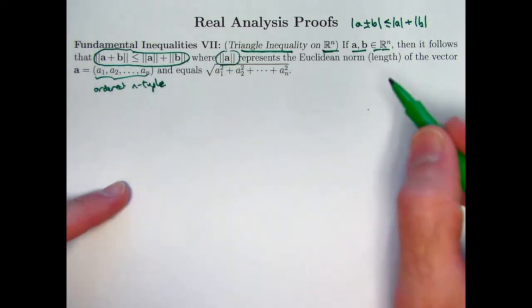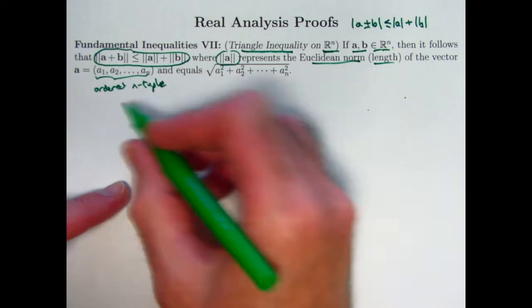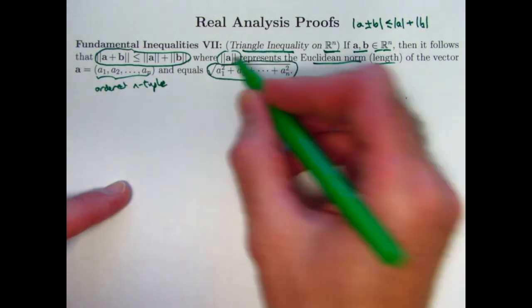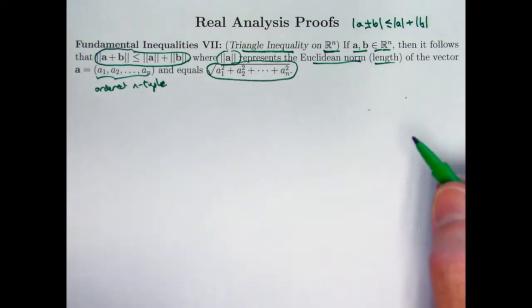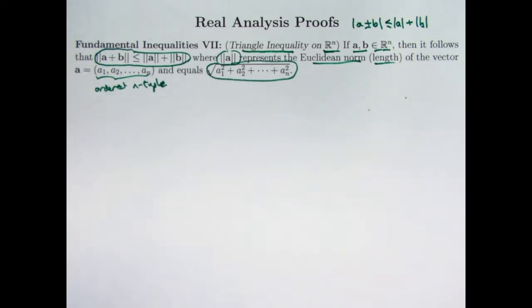This symbol represents something called the Euclidean norm, or length, of the vector. And it equals this expression right here, the square root of a1 squared plus a2 squared plus dot dot dot through plus an squared. If n is 2, this is motivated by the Pythagorean theorem. Euclidean and Pythagorean theorems are from ancient Greeks from over a couple thousand years ago.